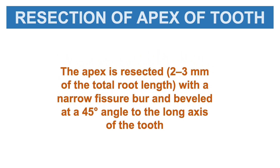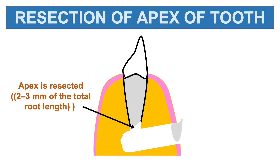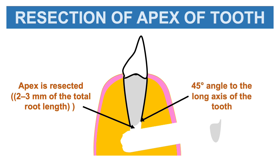After removal of the tissue, resection of the apex is performed. The apex is resected 2 to 3 mm of the total root length using a narrow fissure burr, beveled at a 45-degree angle to the long axis of the tooth. This is a very important point — the resection is not done straight but at a 45-degree angle to the long axis of the tooth.